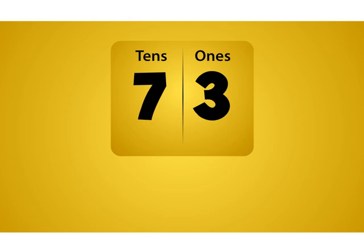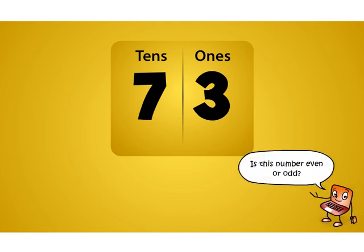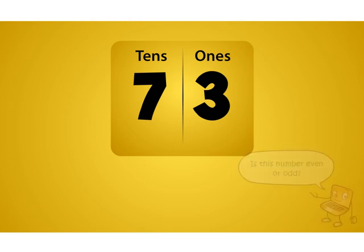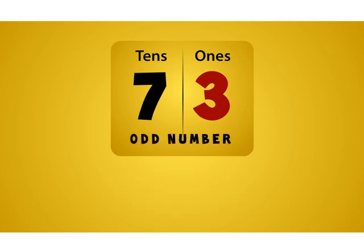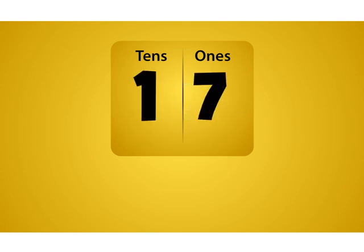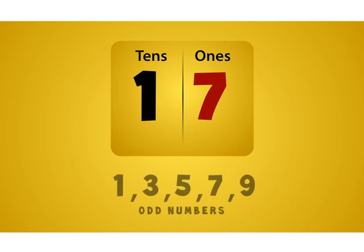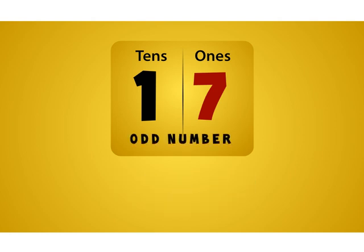Now take the number 73. Is this number even or odd? The number in the ones place is 3, and 3 is an odd number. So 73 is also an odd number. What about the number 17? The number in the ones place is 7, which is an odd number, so 17 is an odd number.